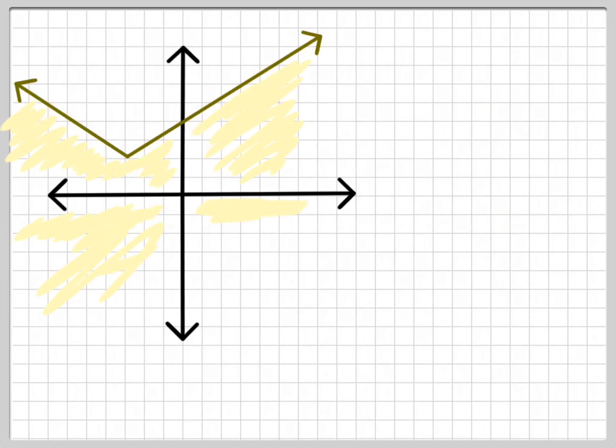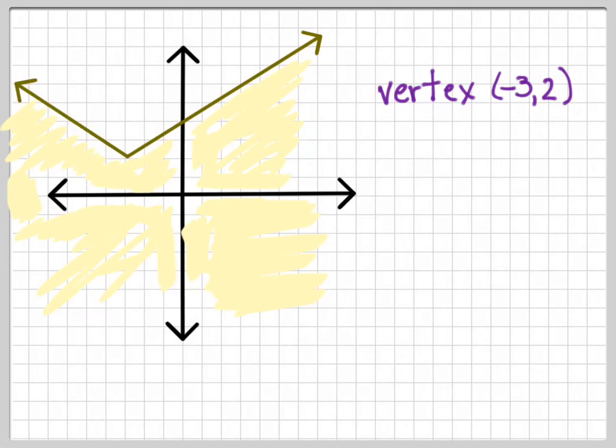Alright, so let's try this one. I gave you this problem. This is absolute value. The parent function is y equals the absolute value of x. And so where is the vertex? Well, the vertex is at negative 3, 2 right there. And what is the slope of the right arm? Well, the slope of the right arm is up 2 to the right 3, so it's 2 thirds.